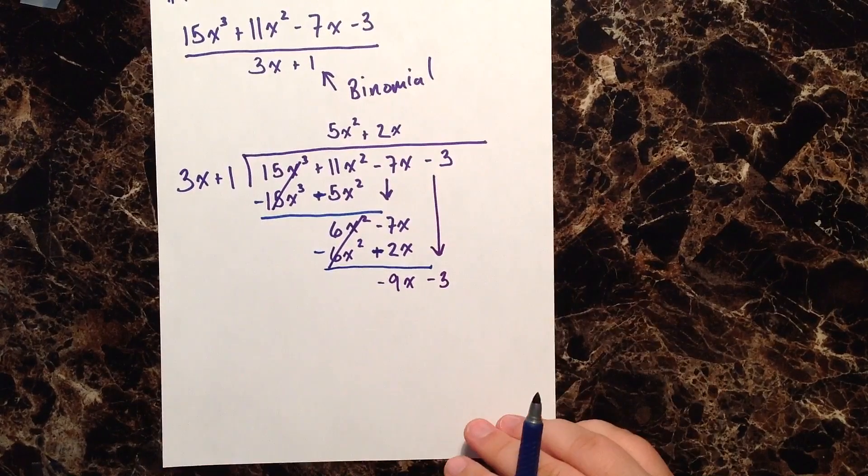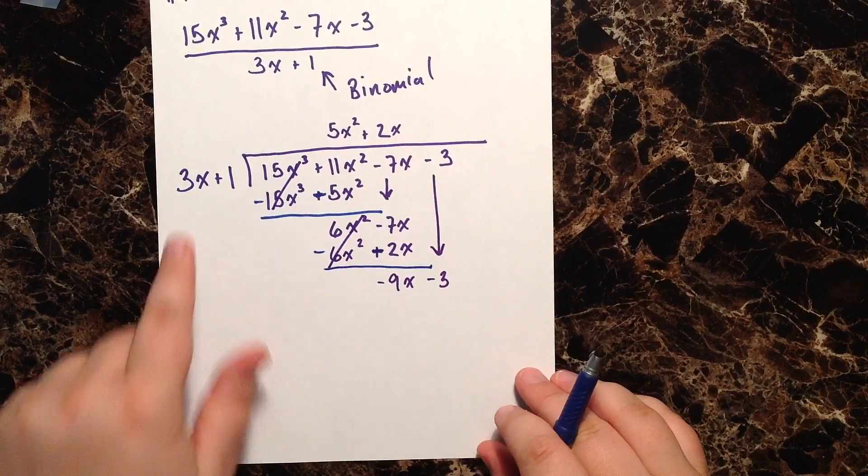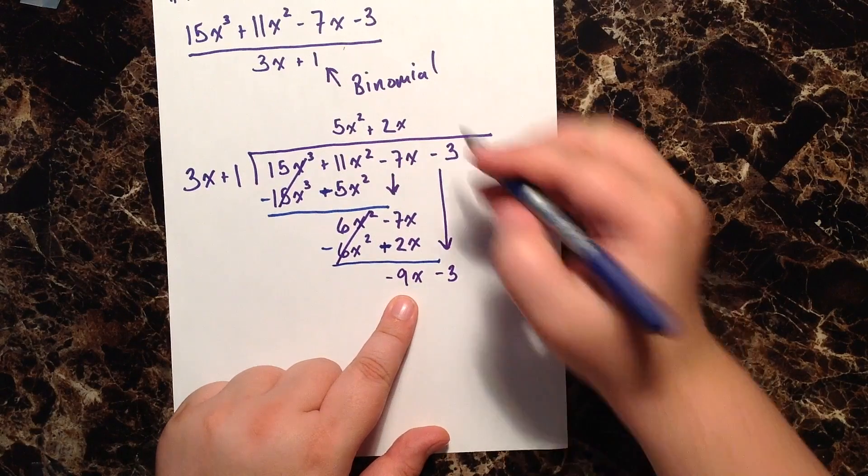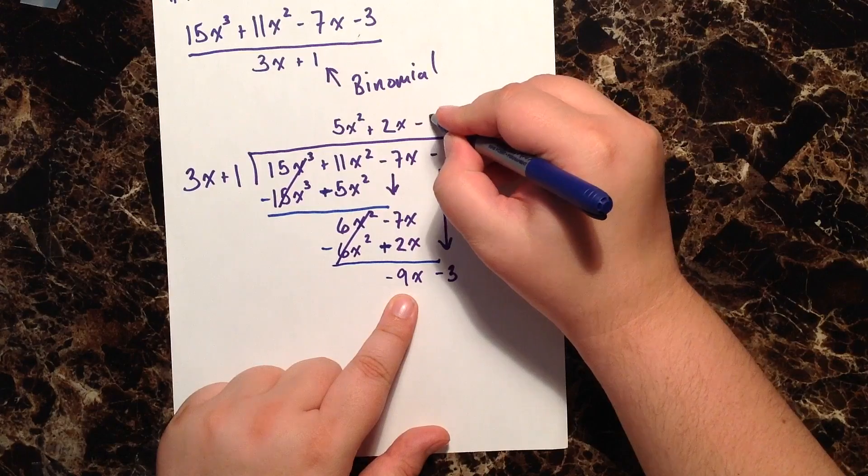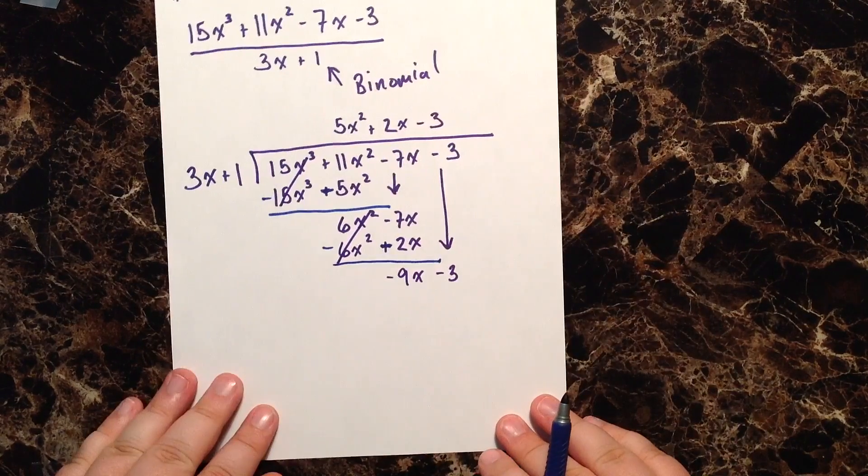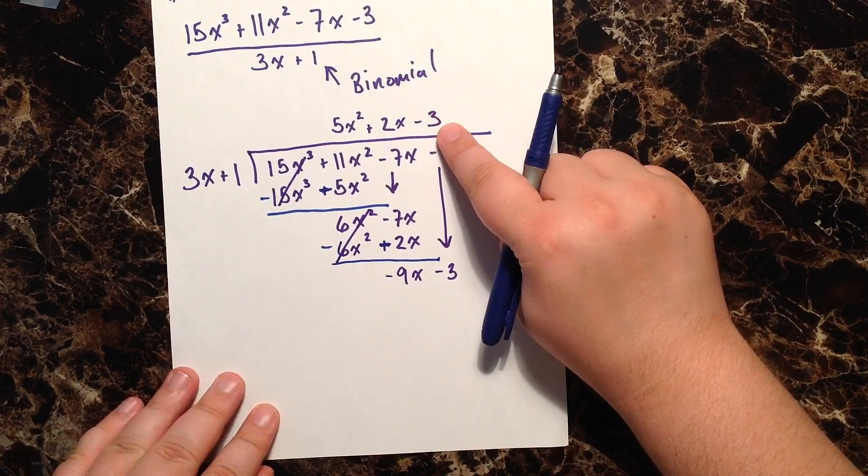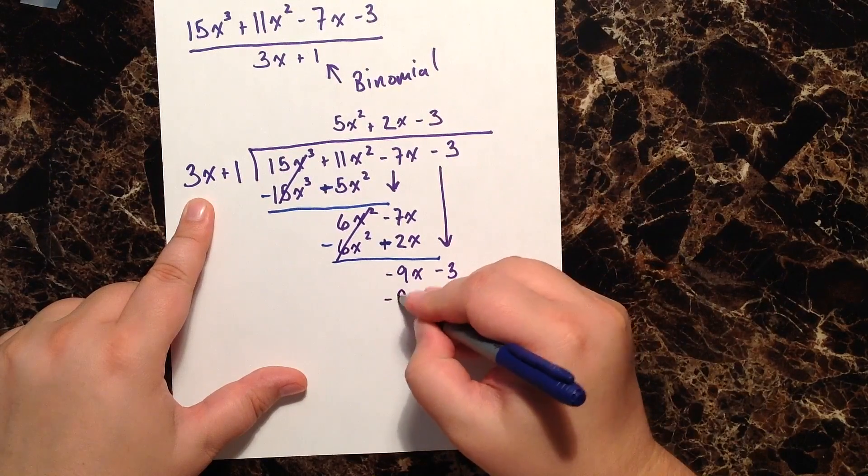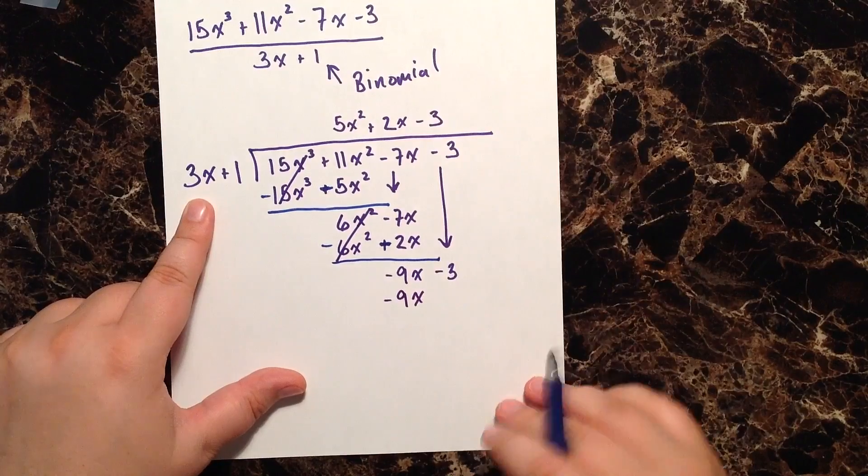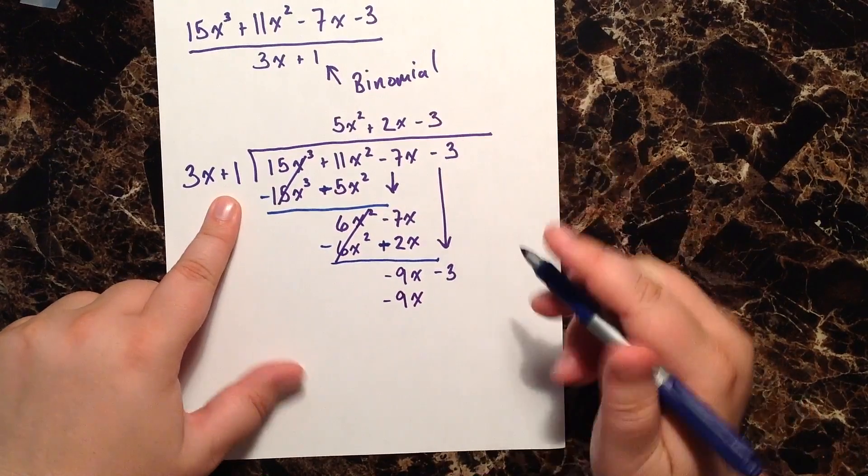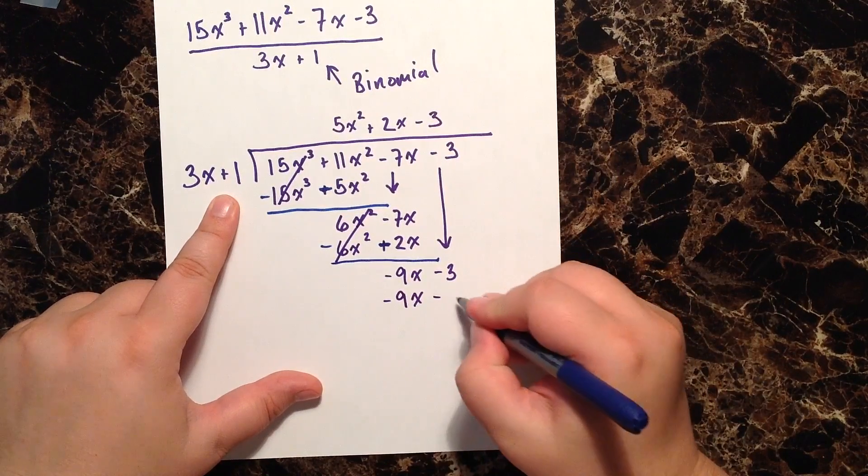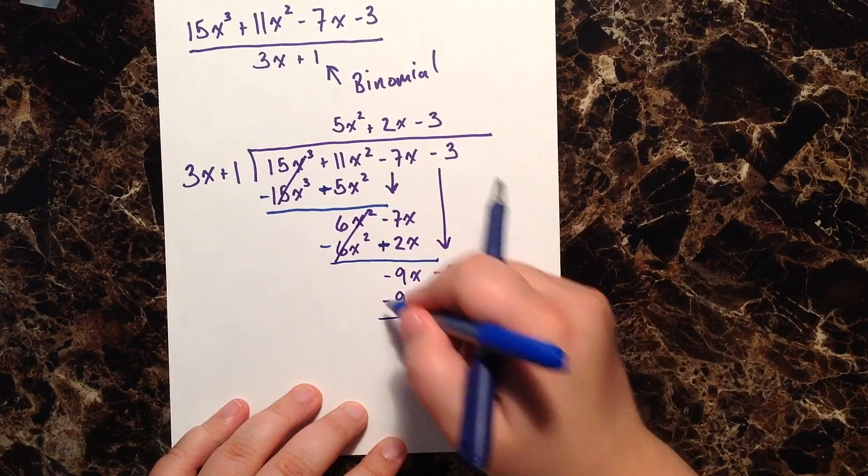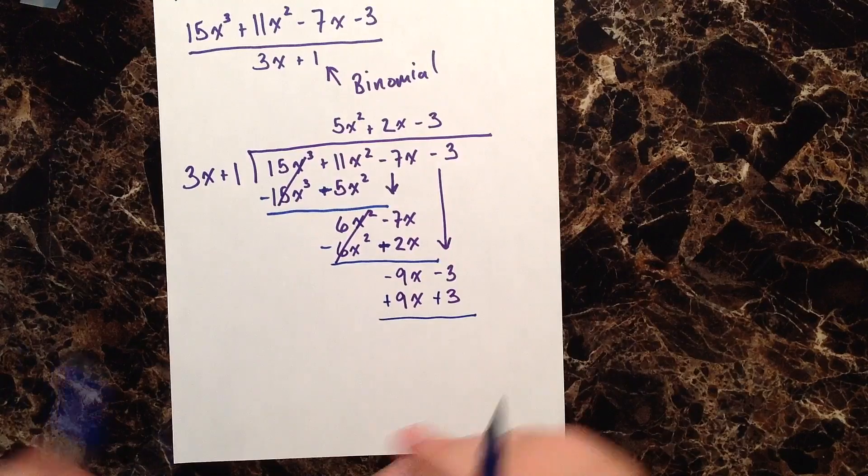What do I have to do to 3x to get to negative 9x? Well I've got to multiply it by negative 3. Negative 3 times positive 3x gives me a negative 9x. Negative 3 times positive 1 gives me a negative 3.